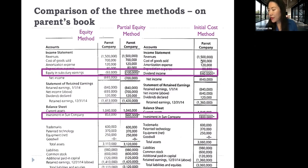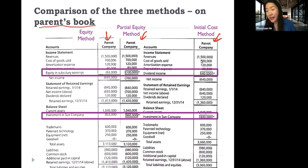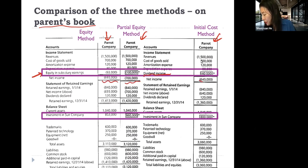First, let's compare the three methods on the parent's book. These three columns show how the parent book will look under each of the three methods. Almost every row is exactly the same except two rows. One is equity and subsidiary earnings, and for the initial value method we have dividend income. This causes a difference in net income, which is also carried over to cause a difference in ending retained earnings.